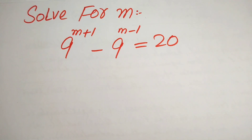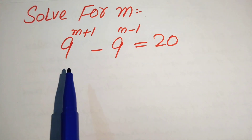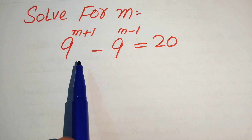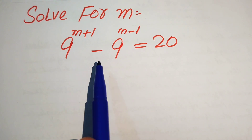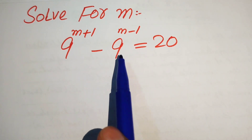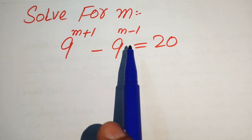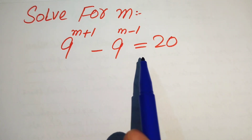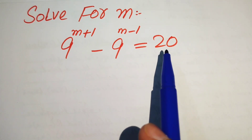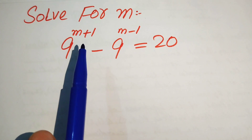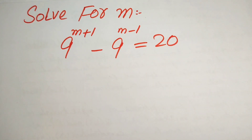Hello everyone, welcome to solve this nice math lumped exponential equation problem. Here we have 9 to the power of m plus 1 minus 9 to the power of m minus 1 equals 20, and we solve this problem for the values of m.